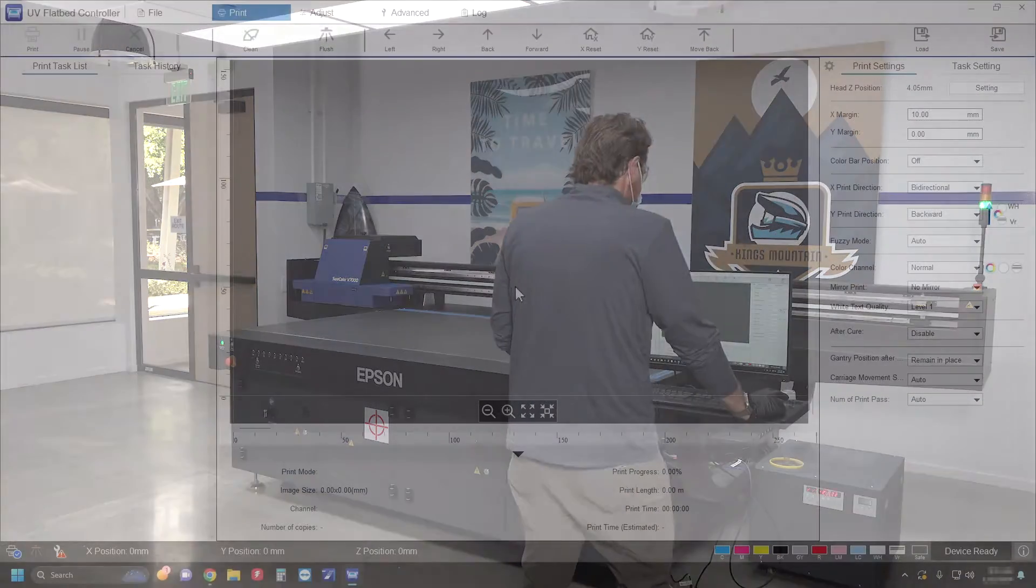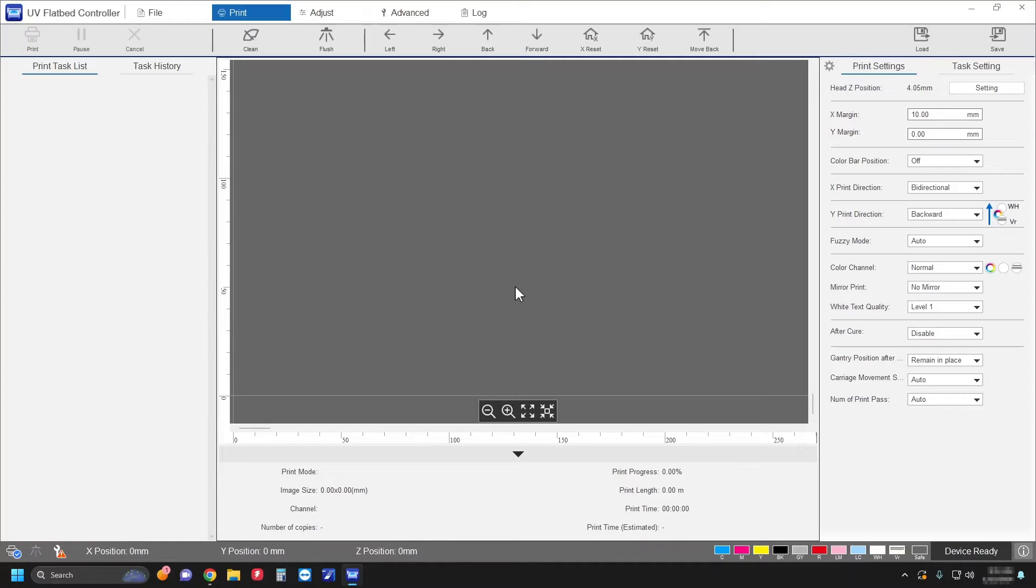Open the UV flatbed controller software. Then click Clean to move the carriage to the maintenance position.